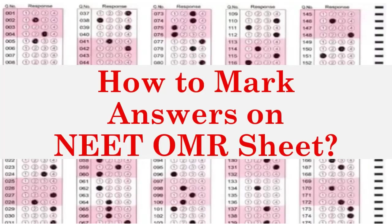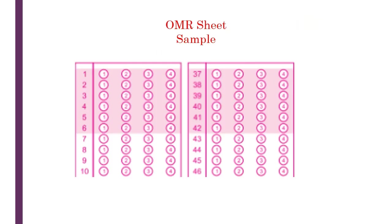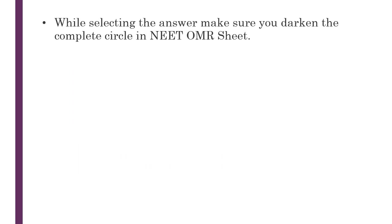Now, how to mark your answers in the OMR sheet. For each question number you will have four bubbles marked as one, two, three, and four, representing the four options from the question booklet. Whatever option you select, you need to fill that bubble completely — darken the entire circle. You can only darken one circle for each question.